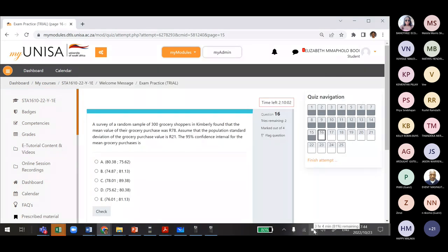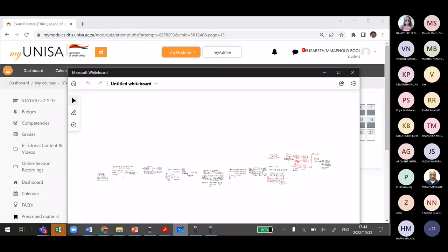The first question you need to check for is, are you given the population standard deviation or the sample standard deviation? Because you will need to go and find the critical value on the Z table or the T table. So in this question, they've given us the population standard deviation, so it means we're going to use the Z table.